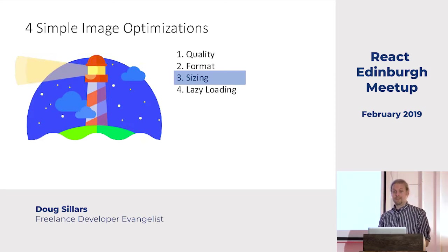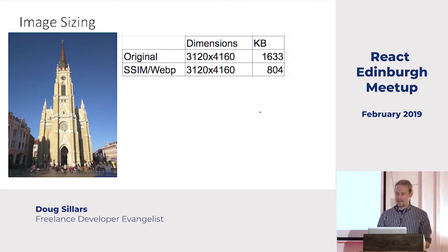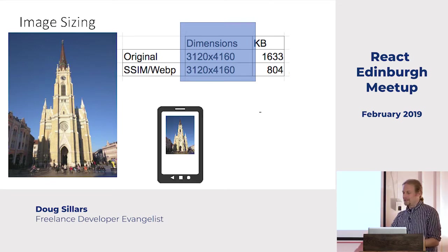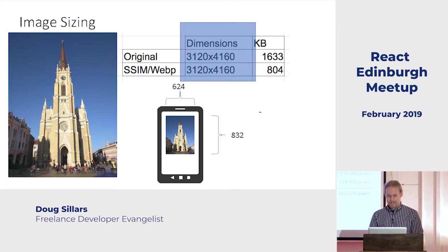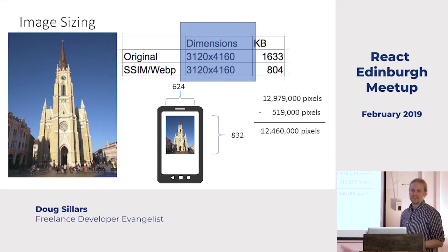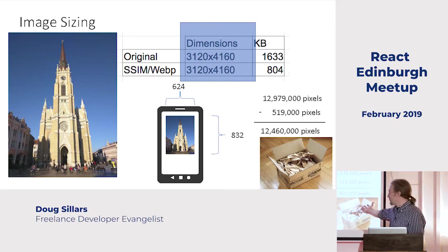The third optimization is sizing — resizing the image for the proper device. If I take this image of a cathedral, the original is 1.6 megabytes. I do all the optimizations we talked about and get it to half the size at 800K, but it's still 13 million pixels. The problem is, if you have a 13 million pixel image downloaded onto a mobile device that's tiny, the phone downloads all 13 million pixels, determines what goes on screen, then throws away 12.5 million pixels. It's double taxation — like ordering from Amazon and finding eight and a half meters of brown paper wrapping around a pencil.